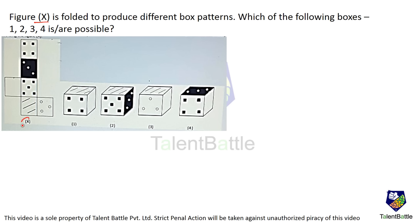Figure X is folded to produce different box patterns. We need to check which of boxes 1, 2, 3, 4 are possible. Observing the net: the black dots side and the three-lines side are going to be exactly opposite to each other — they can never be adjacent. In box 1, these two faces appear adjacent, so box 1 is not possible.